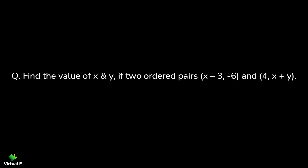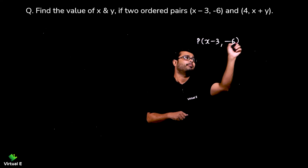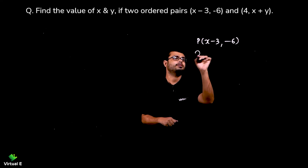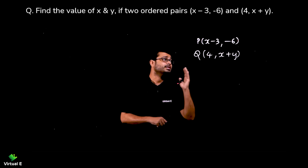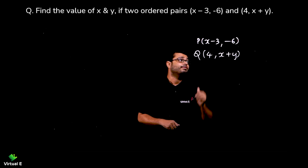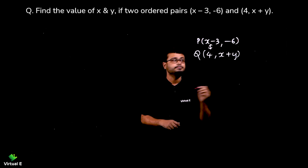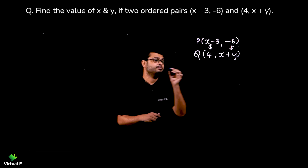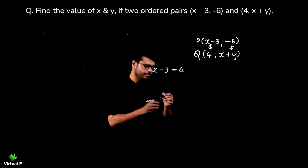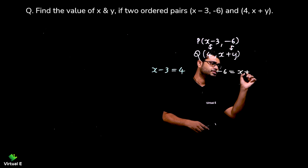Find the value of x and y if two ordered pairs (x minus 3, minus 6) and (4, x plus y) are equal. Let's name them: point P is (x minus 3, minus 6) and point Q is (4, x plus y).